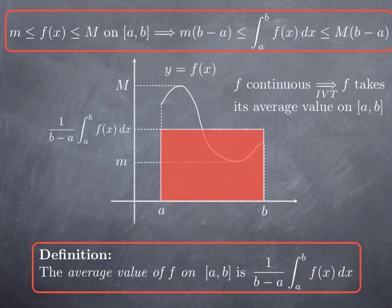So it makes perfect sense to call that the average value of the function, because this is the value that you need for a constant function in order to get the same integral — the same area under the graph — as for the function f. That leads us to the definition: the average value of a function f on a closed interval is the integral of that function over that interval divided by the width of the interval. Note that if the function is continuous, it is going to take its average value on the interval [a,b], because of the intermediate value theorem, since this value is between the minimum and the maximum.